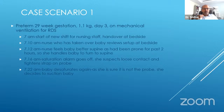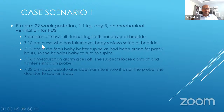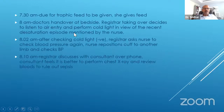A couple of quick case scenarios. We have a premature baby, 29 weeks gestation, 1.1 kilo, day three of life on mechanical ventilation for respiratory distress. At the start of the nursing shift at 7 AM, the nurse who has just taken over reviews the setup and feels the baby would be better supine, so she turns the baby. A few minutes later the saturation alarm goes off — she suspects loose contact, tightens the strap, the baby desaturates again, so she decides to suction. The baby was due for a trophic feed at 7:30 and she gives the feed.